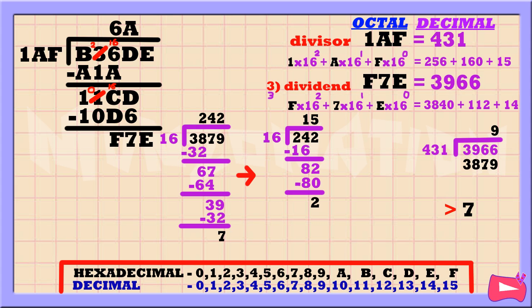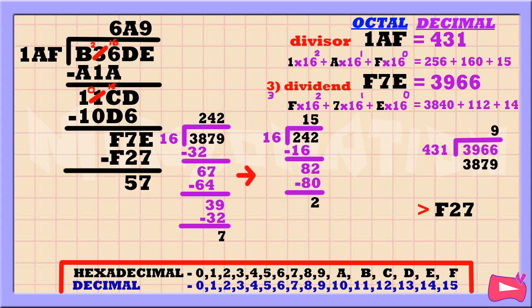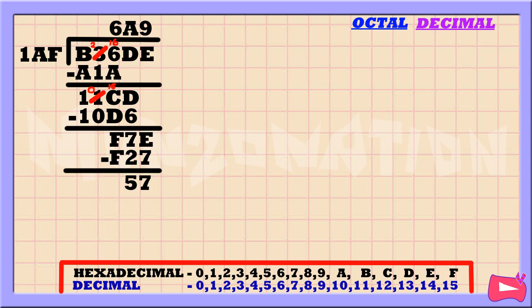The first remainder that we get is our first hex number, and the second remainder is our second hex number, and our last quotient is our last hex number. So 1AF goes into F7E 9 times. Then 9 times 1AF is F27. Now let's subtract. E minus 7 is 7. Then 7 minus 2 is 5. Then F minus F is 0. 57 is our remainder. So our final answer is 6A9 remainder 57.